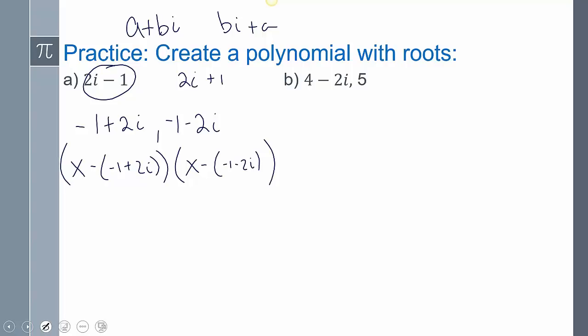Now for this next one here, I have three roots. So I also have to assume that 4 + 2i also exists. So I can write out my polynomial. x - 5, x minus your zero, x minus your zero.